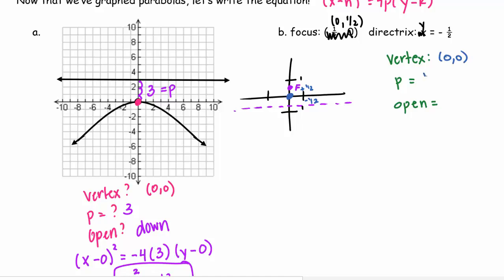And p is 1/2 because we went up 1/2 and down 1/2. And they have to be the same distance away. So since the focus is up top and it has to be inside my parabola, my parabola is opening up. So I can use that information to write the equation. So (x - 0)² = 4(1/2)(y - 0). So x² = 2y after we clean it up and make it all nice and pretty.